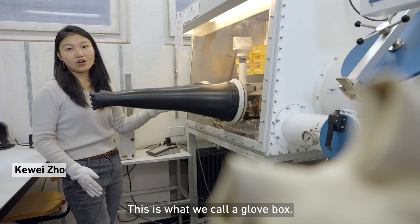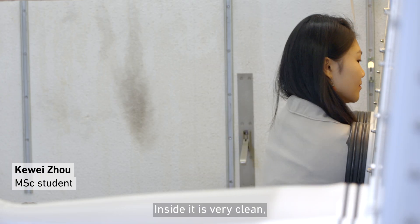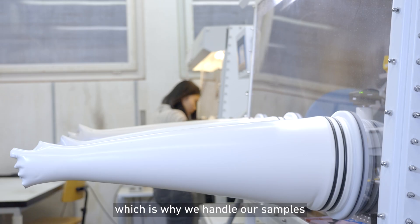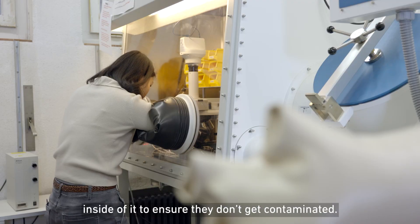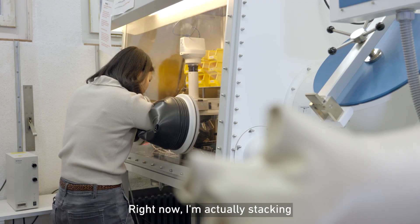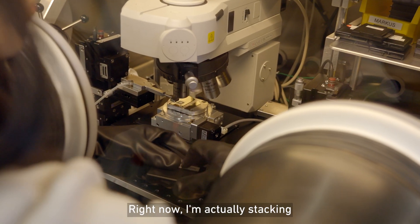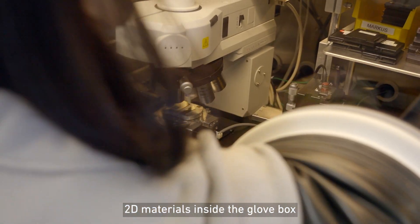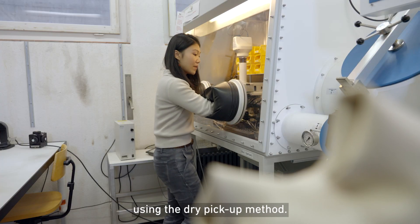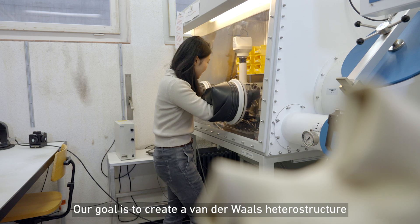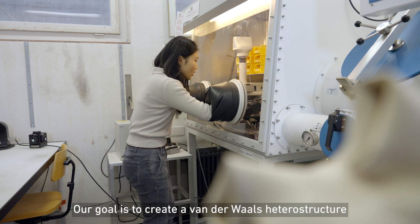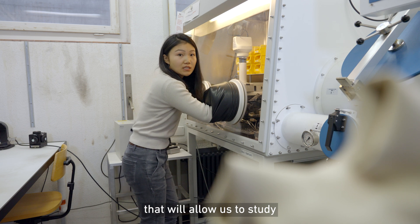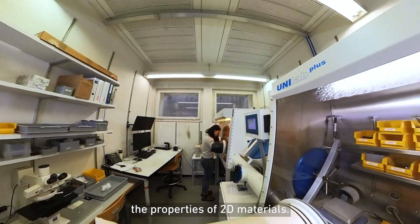So this is what we call a glove box, and inside it is very clean, which is why we would like to handle our samples inside so that they don't get contaminated. Right now, what I'm doing is actually stacking 2D materials inside the glove box using the dry pickup method. And the goal here is that we would have a van der Waals heterostructure where we would be able to study the properties of 2D materials.